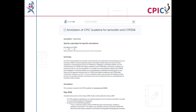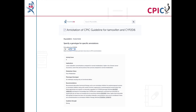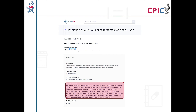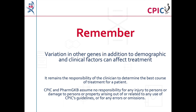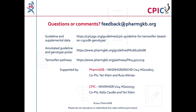This guideline has been annotated on the PharmGKB website, including a drop-down menu where an activity summary can be given for specific combinations of alleles. The activity summary includes implications for the patient's response to tamoxifen, the appropriate dosing recommendation for the specific genotype, and the strength of that recommendation. Remember that variation in other genes, in addition to demographic and clinical factors including concomitant medications, can affect treatment. It remains the responsibility of the clinician to determine the best course of treatment for a patient. CPIC and PharmGKB assume no responsibility for any injury to persons or damage to property arising out of or related to any use of CPIC's guideline or for any errors or omissions. The guideline and supplementary information are freely available at the PharmGKB and CPIC websites, accessible using the links in the description below this video.